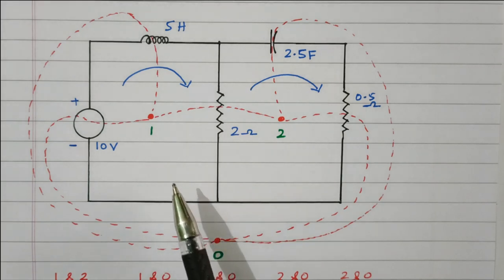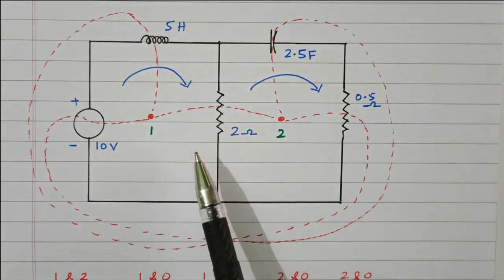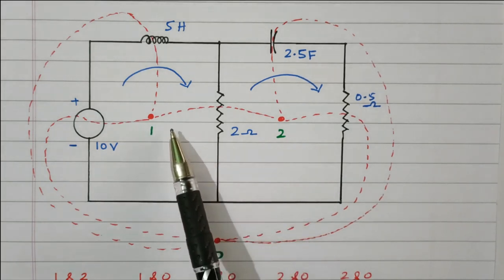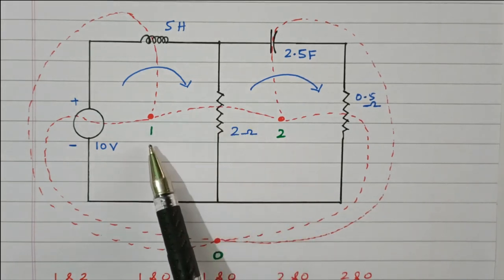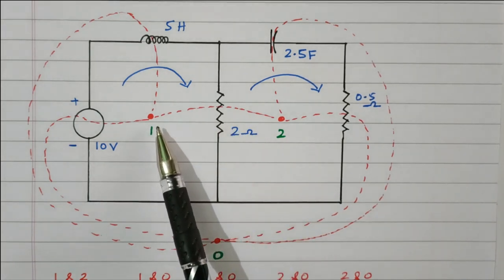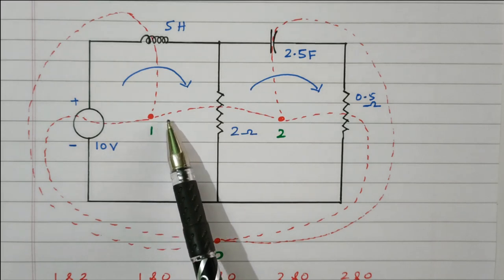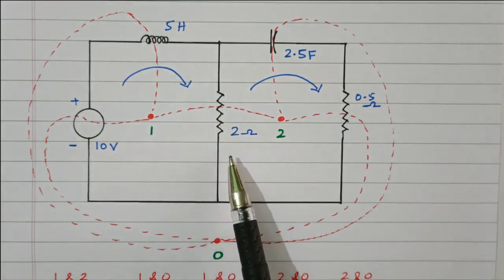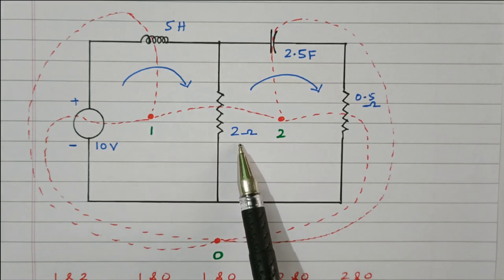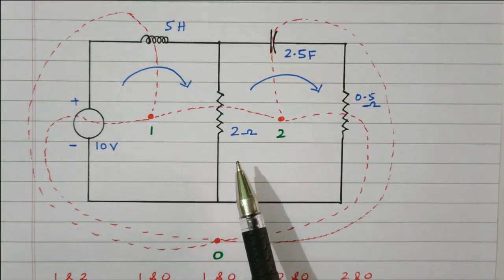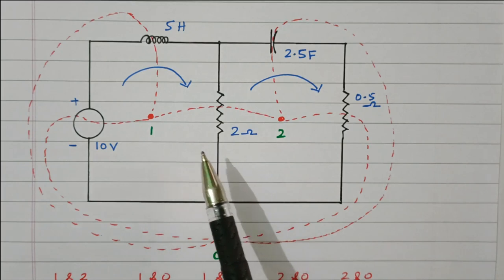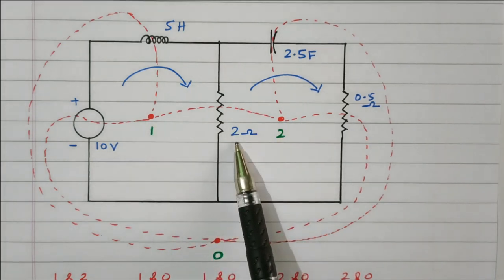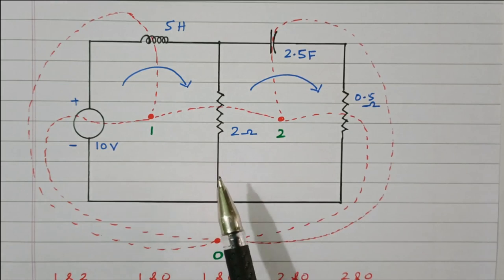The second step is we need to connect all the dots. First we will connect dot 1 and 2 through the elements using dotted lines. The dotted line is drawn between 1 and 2 through the 2 ohm resistor. This 2 ohm resistor will be converted into 2 mho conductance. So between 1 and 2, the 2 ohm resistor is converted into 2 mho conductance.